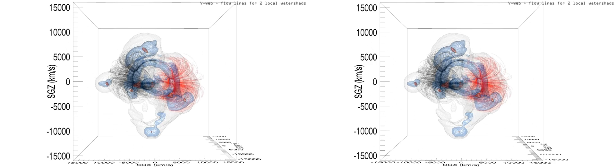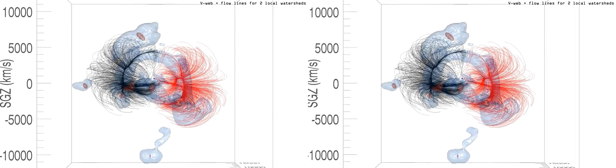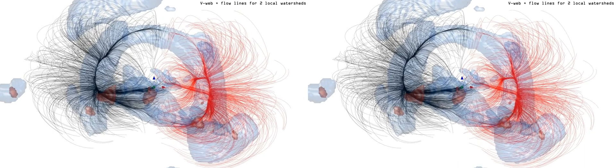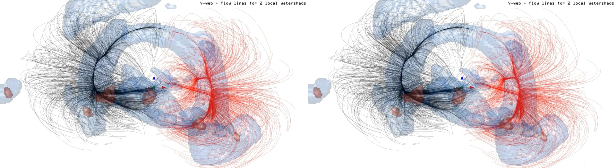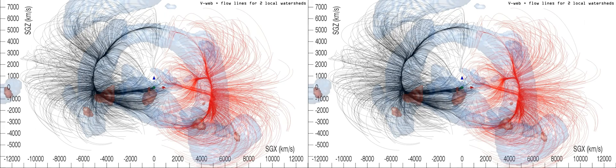We see local velocity flows in two adjacent regions. We live in the region of the black flow lines, but we are near the transition to the red flow lines associated with the Perseus Pisces Basin of Attraction.